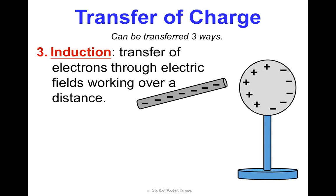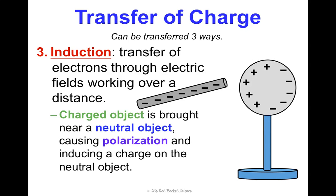A third way is induction — a transfer of electrons through electric fields, so we're talking over a distance without actually touching anything. We have an electrically neutral object and a negatively charged rod. When I bring the negatively charged rod towards this object, like charges repel, so the electrons move backwards. That leaves the protons, which are positive, towards the front, attracted to the rod. So we're actually inducing a positive charge on this object — we bring this charged object towards a neutral object, it causes something called polarization, separating the charges and inducing a charge on the neutral object. This is how the balloon sticking to the wall works — through induction.